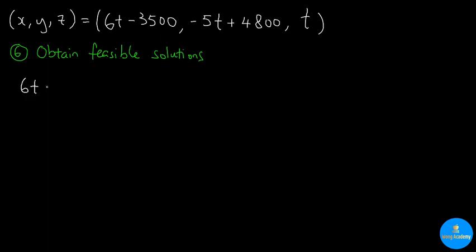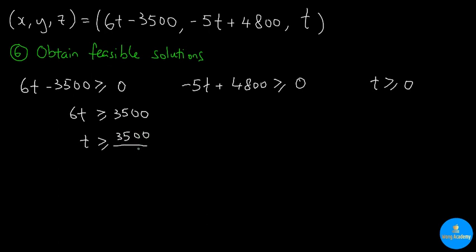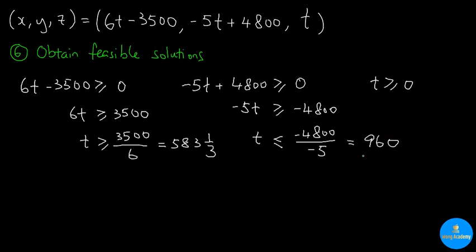How can we do that? First, we are going to set up a linear inequality for each entry to make sure that every single entry is greater than or equal to zero. Next, we are going to solve all of them. We will add 3500 to both sides and then divide by 6. This simplifies to 583 and 1 third. We are going to subtract 4800 on both sides, and then divide by negative 5. Because negative 5 is negative, we need to flip the inequality sign, and this is equal to 960.